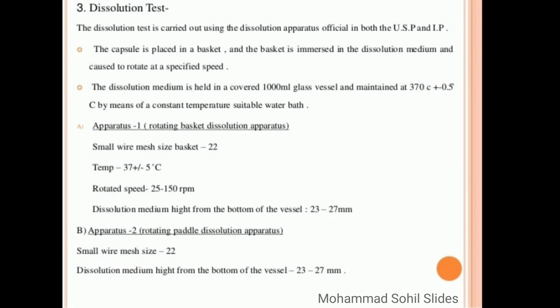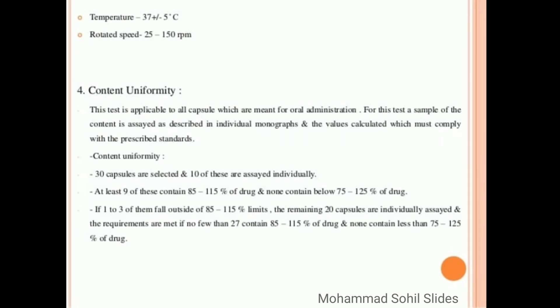The dissolution medium height from the bottom of the vessel is 23 to 27 mm at the rotating speed of 25 to 150 rpm, same as Apparatus 1. Then content uniformity. This test is applicable to all capsules which are meant for oral administration.